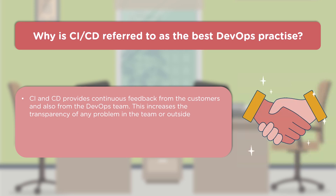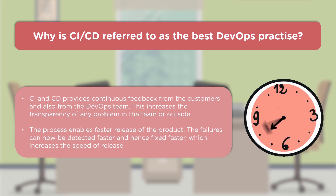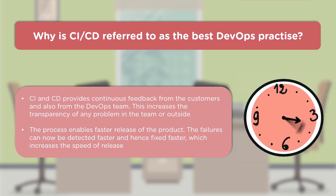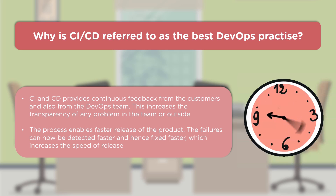CI/CD provides continuous feedback from both customers and development teams, increasing transparency. The process enables faster product releases — within hours or days rather than months — with build compilation, testing, and validation all completed in that duration. Failures are detected faster, and even hot fixes can be deployed to production within just a couple of hours.